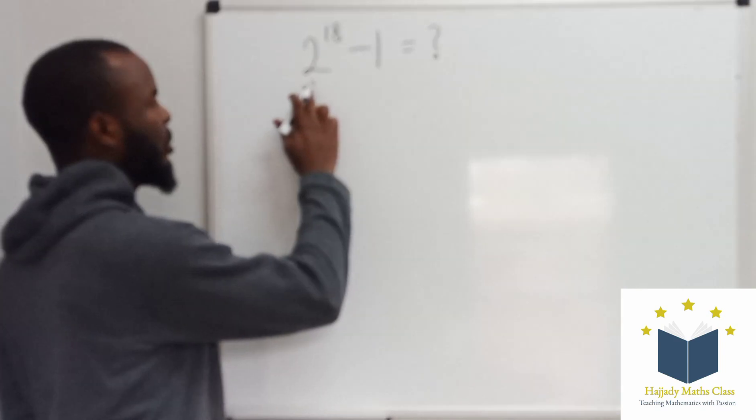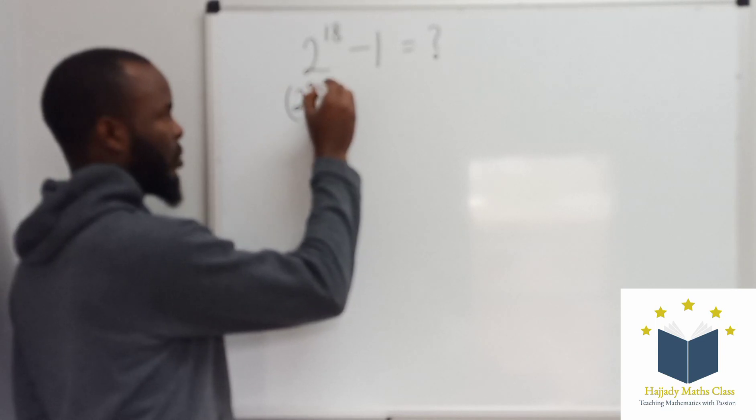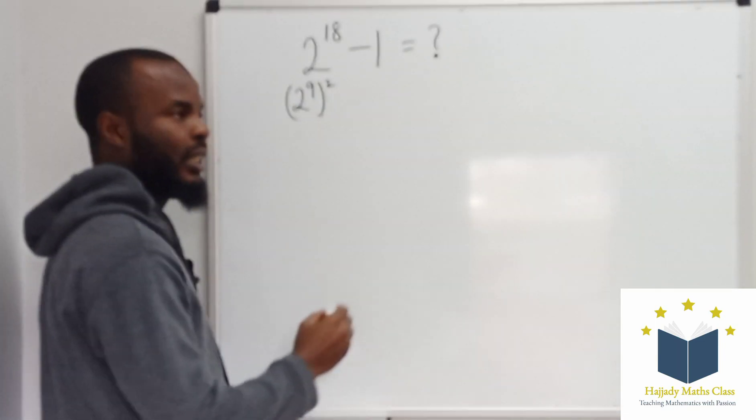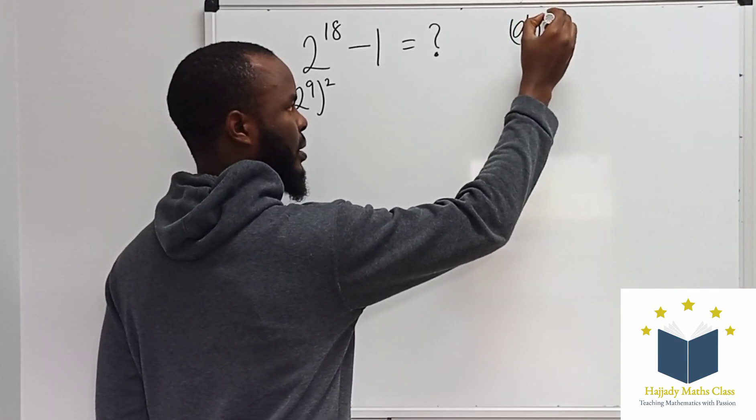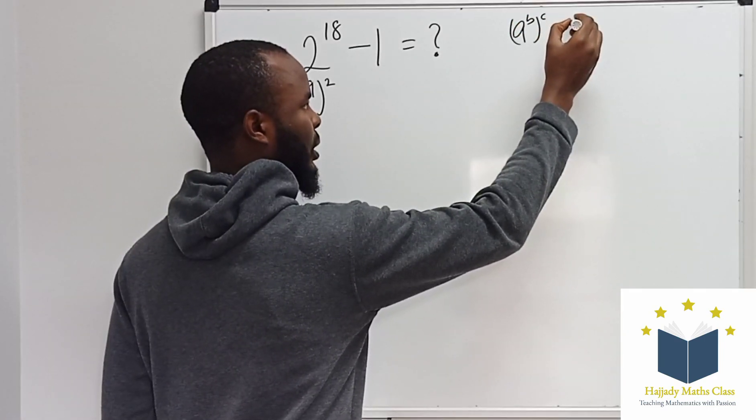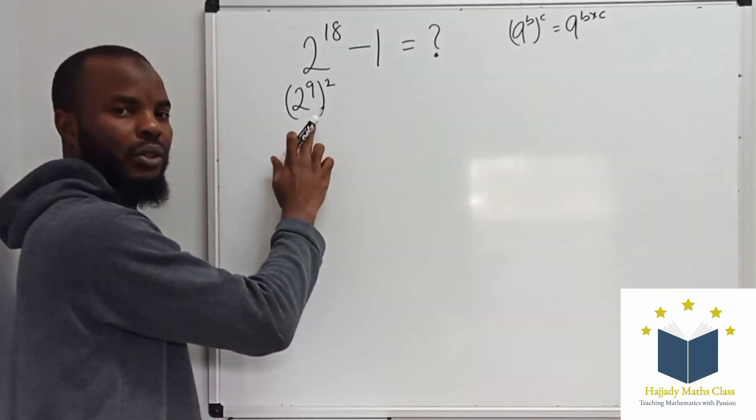Now, rewriting 2 to the power of 18, that is the same thing as saying 2 to the power of 9 squared. Don't forget the rule of indices that says A to the power of B times C is the same thing as A to the power of B multiplied by C. So that's what I use there.